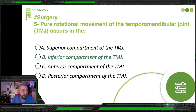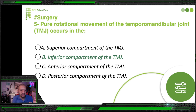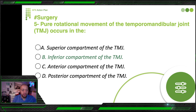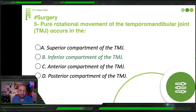So the answer is: pure rotational movement of the TMJ occurs in the inferior compartment. Note: there is no anterior or posterior compartment — that's a distractor. This is why solid anatomical knowledge makes surgery questions easy. For example, understanding space infections requires knowing muscle attachment levels: if an infection from an upper first molar goes above or below the buccinator muscle insertion, it determines whether you get a buccal space or vestibular infection.